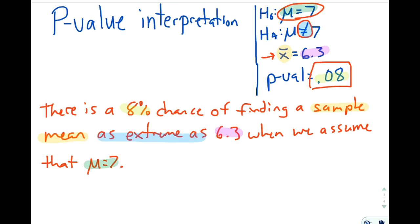Let's read through one more time. There's an 8% chance, a p-value chance, of finding a sample mean, because we're dealing with means here, as extreme as, because of my alternative hypothesis, 6.3, which is that number that I found, when we assume that μ equals 7, when we assume the null is true. This would be one good way of writing it. There are a number of correct ways to do it. There are countless more incorrect ways to do it. So we'll practice adding some variety to that. But this is a really good starting point.